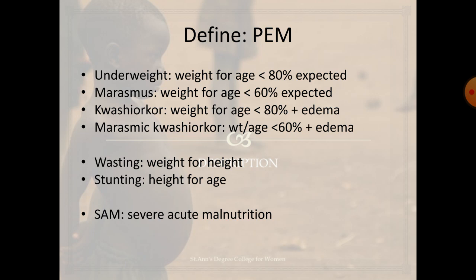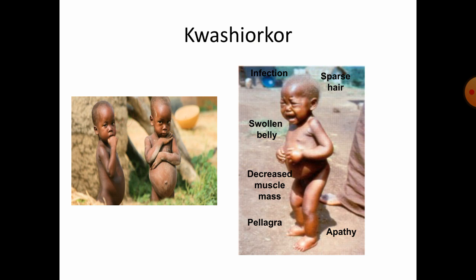PEM is broadly divided into: underweight, where weight-for-age is less than 80% expected; Marasmus, where weight-for-age is less than 60% expected; Kwashiorkor, where weight-for-age is less than 80% expected with edema; and Marasmic-Kwashiorkor, where weight-for-age is less than 60% with edema. PEM also shows wasting, where weight is not appropriate for height, and stunting, where height-for-age is reduced.